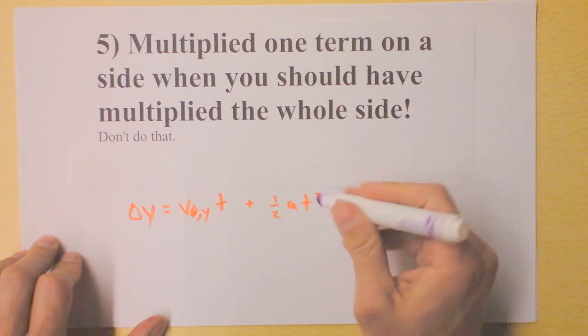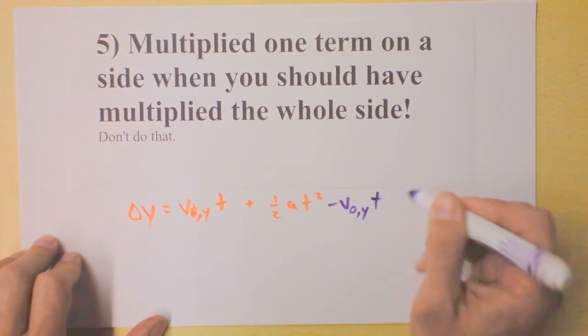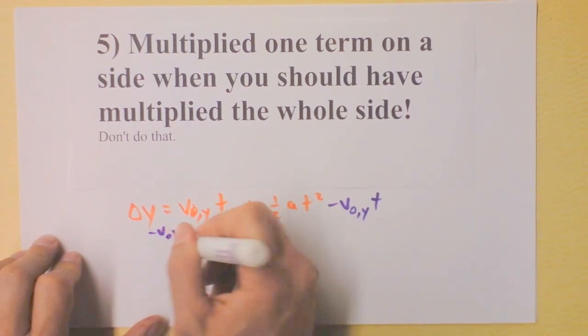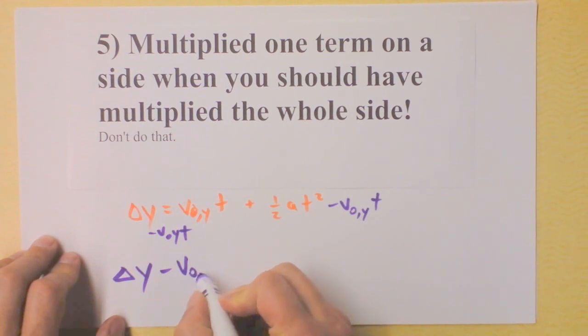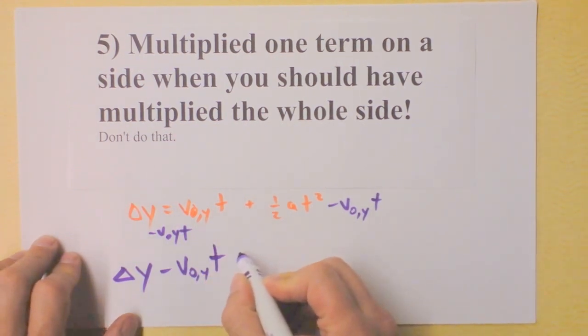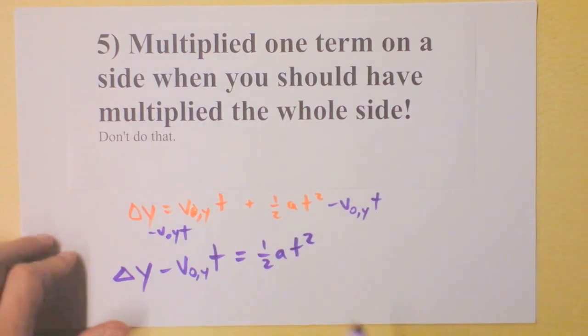You're going to subtract this term from both sides. I'm going to subtract v₀y times t. I'm going to get Δy minus v₀y times time equals ½ acceleration times time squared.